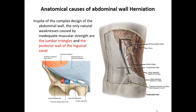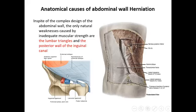Anatomical causes of abdominal wall herniation: in spite of the complex design of the abdominal wall, the only natural weakness caused by inadequate muscular strength are the lumbar triangles. The base is formed by the iliac crest, the lateral wall by the edge of latissimus dorsi, and the anterior wall by the edge of external oblique. Also, the posterior wall of the inguinal canal is a weakness, which will be discussed in coming slides.